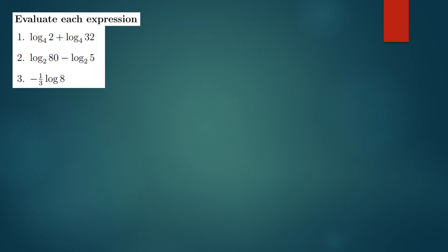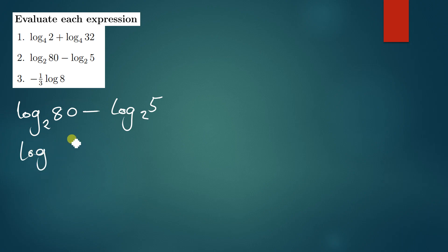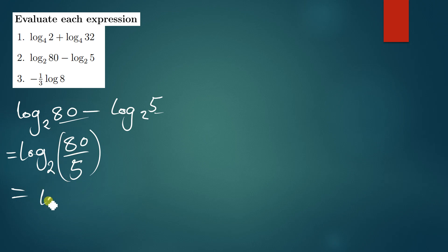Question 2 is log 80 base 2 minus log 5 base 2. When there is addition between logarithms you multiply the functions, but since here we have subtraction, we are going to divide the functions. So this becomes log(80/5) base 2.